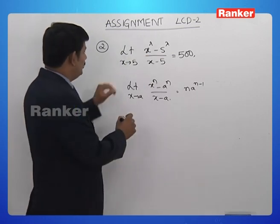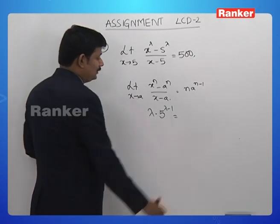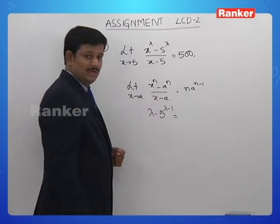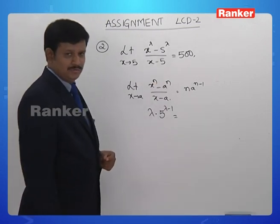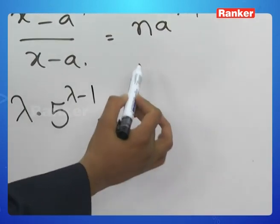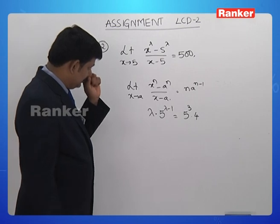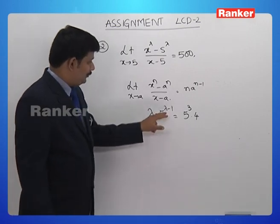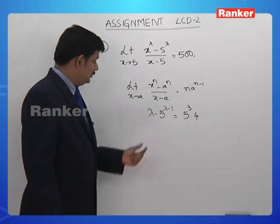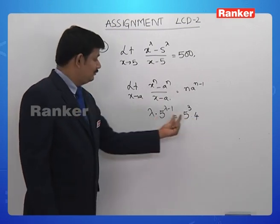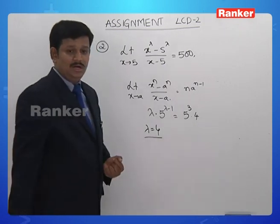So, for this question the limit is going to be λ·5^(λ-1), and this is given to be 500. Prime factorizing 500: 500 is 125 × 4, and 125 is 5³, so 500 equals 5³ × 4. Comparing, we get λ·5^(λ-1) = 4·5³, from which λ = 4 satisfies the equation. So λ equals 4, or the answer is option B.